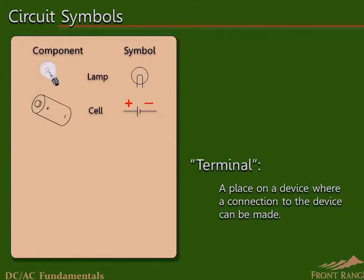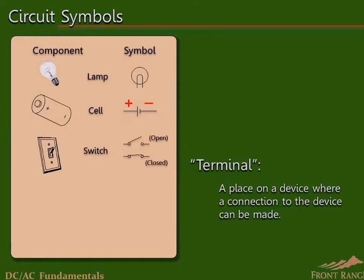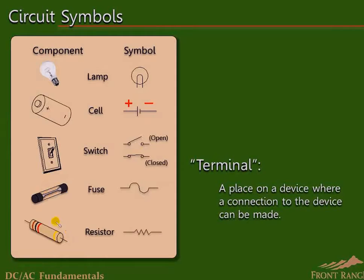A switch is a control device. If the switch is open, as shown here, no current can flow. If the switch is closed, the circuit is complete and current can flow from the power source to the load and back to the opposite side of the power source. A fuse is a component that protects other components if too much current is flowing, probably due to a malfunction in the circuit or an attempt to connect too many loads. A fuse is designed to melt, creating an open circuit, and this stops the flow of current.